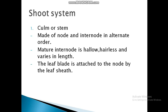In the shoot system, the stem or culm is made of nodes and internodes arranged in alternate order. The mature internodes are hollow and hairless and vary in length. The leaf blade is attached to the node by the leaf sheath.